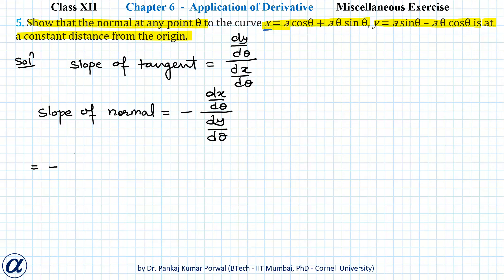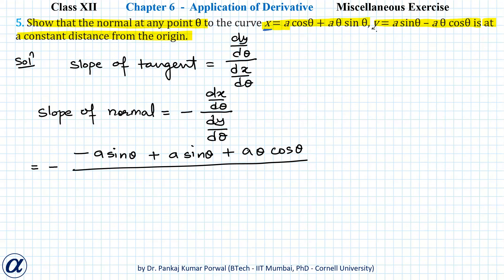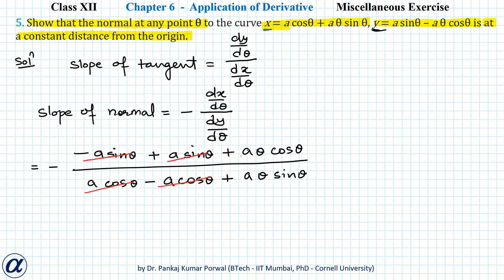The derivative of x with respect to theta is −a sinθ + a sinθ + aθ cosθ, divided by the derivative of y with respect to theta, which is a cosθ − a cosθ + aθ sinθ. The −a sinθ cancels a sinθ, a cosθ cancels −a cosθ, and aθ cancels aθ, leaving minus cosθ upon sinθ.